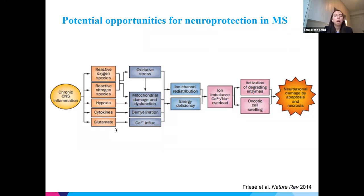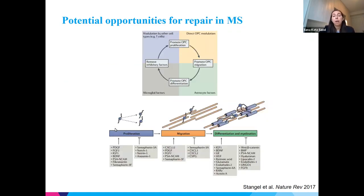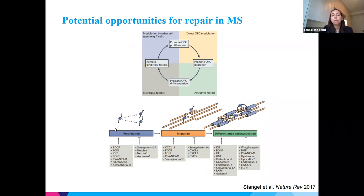In terms of neuroprotection, there is a proposed model of neurodegenerative pathways leading to axonal loss in MS. Chronic CNS inflammation leads to reactive oxygen species, chronic hypoxia, and further inflammatory cytokines, which over time leads to oxidative stress, mitochondrial damage, and cellular dysfunction. The cells try to compensate by redistributing ion channels, but with a state of chronic energy deficiency, it's not sustainable, and we have continued neuroaxonal death — experienced by patients as gradual neurologic decline. We also know remyelination happens in MS, and if we can find strategies — including dietary factors — to influence this process, that's another opportunity where diet could be helpful.